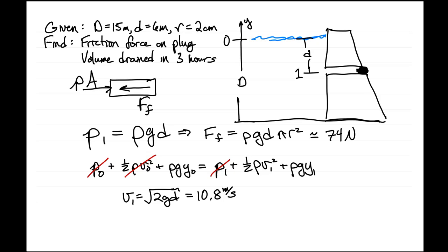So now we want to find the volume that flows out. The change in volume is the volumetric flow rate at 1 times the change in time. The volumetric flow rate is v1 times a1, or a, the cross sectional area of the pipe.